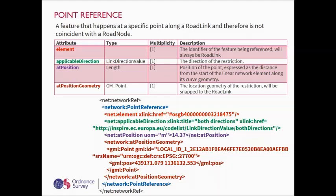We also provide a point reference, used to place features at specific points along a road link but not necessarily coinciding with a road node. This applies to access restrictions, restrictions for vehicles, hazard, and structure. The base reference is the road link (its GML ID). We provide the applicable direction relative to the digitizing direction, a position (the length from the start of the link in meters, in the direction of digitizing), and an approximate position geometry as a simple point reference.